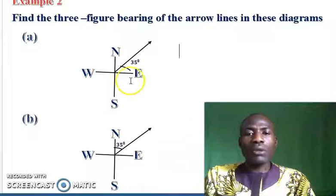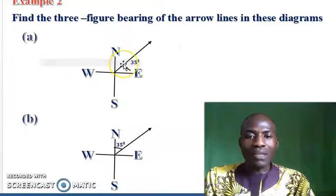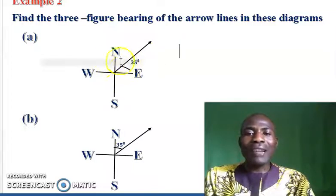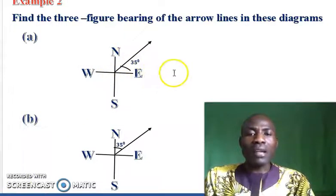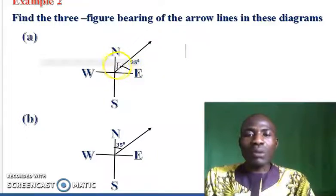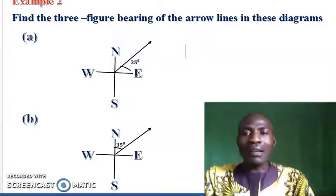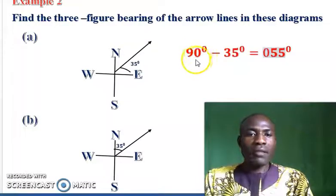For A, what we are asked to do is find the bearing from one place to another. If we observe, this is a compass bearing, so we are indirectly asked to convert a compass bearing into a three-figure bearing. In doing that conversion, we know that from north to east is 90 degrees, so we now say 90.